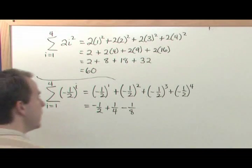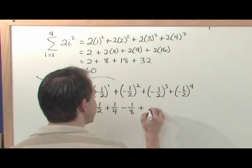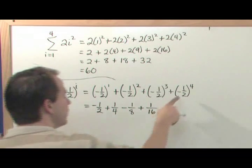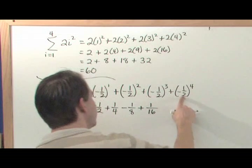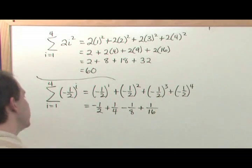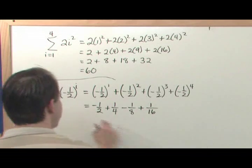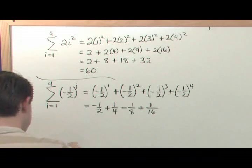This will give you a negative, and then you're going to have positive 1 over 16, because 2 times 2 times 2 times 2 will give you 16, and the negative raised to the 4th power is going to give you a positive. So here's what you have: negative, positive, negative, positive, and you need to add those.